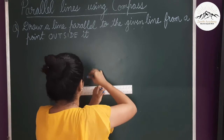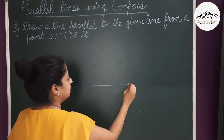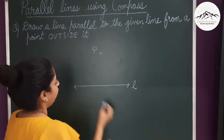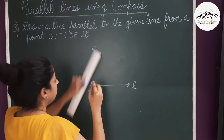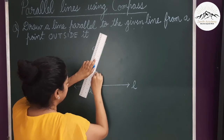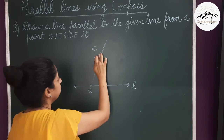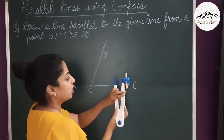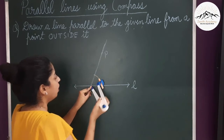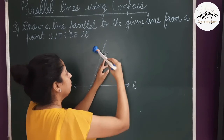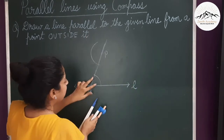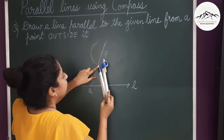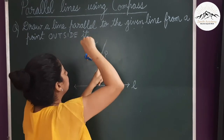Now suppose there is a line L, and from a point P outside this line we have to draw a parallel line. I will first take any point Q on line L and join P and Q as before. Now here we will draw alternate interior angles. Take the compass and keeping the pointer at Q draw an arc. Again keeping the pointer at P, draw an arc on the other side. Take that measure, then keep the pointer on that arc and cut the previous arc.